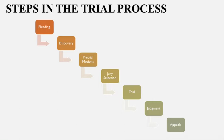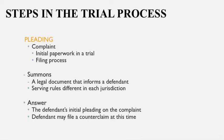Let's talk about the various steps in the trial process. Your book goes into more detail, but I want to highlight a few things. The first step is what we call pleading — this is where all the paperwork is filed. A complaint is filed first, which is basically a form explaining why someone is suing someone else. From there, a summons is delivered to the defendant, giving them legal documentation explaining why they're being sued and by whom.